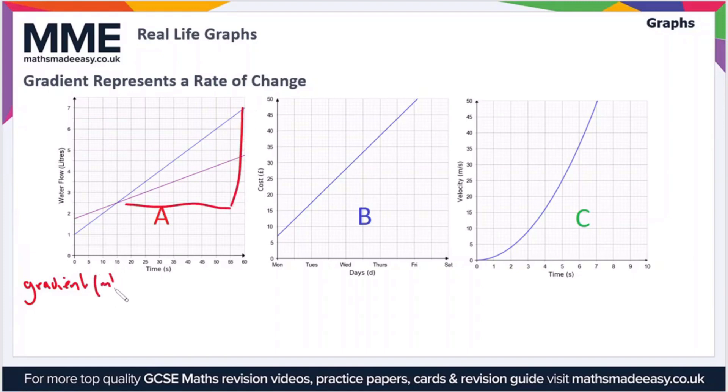so the gradient, or we can say M for short, from Y equals MX plus C, is the water flow per second. So we can say that is the flow rate, and that will be measured in litres per second.